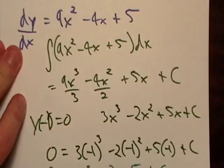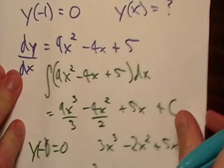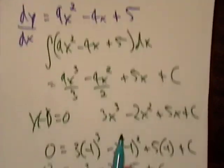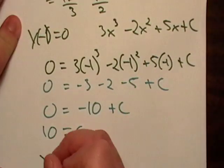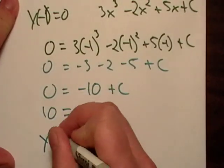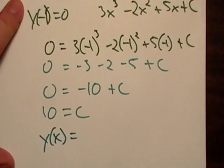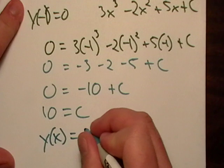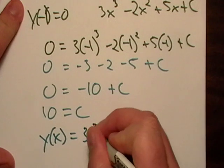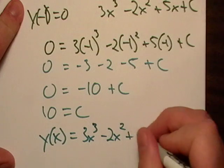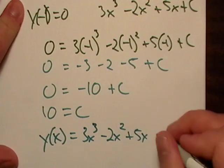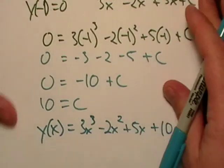Okay, so let's go back up here, and here's my general anti-derivative. Actually, here's a better one that we simplified. So we can take this piece of information. We can go ahead and say now that y of x is equal to three x to the third minus two x squared, plus five x plus ten.